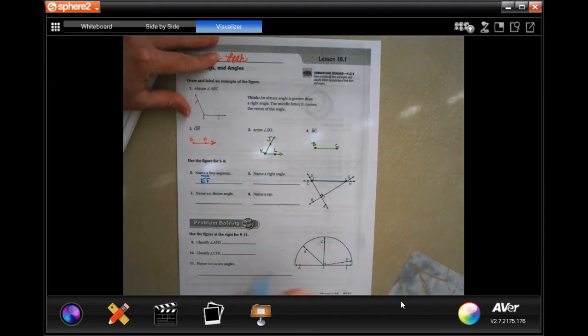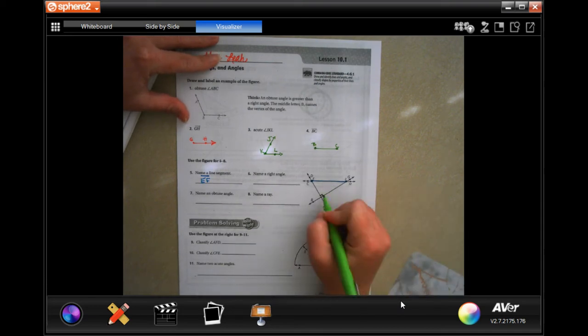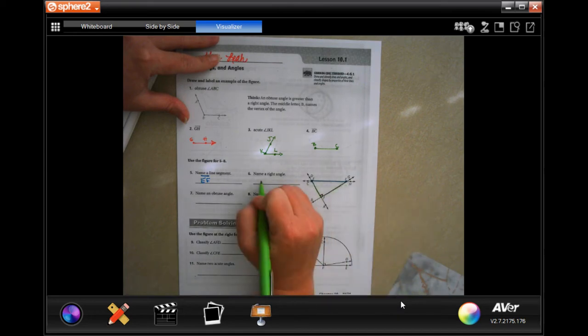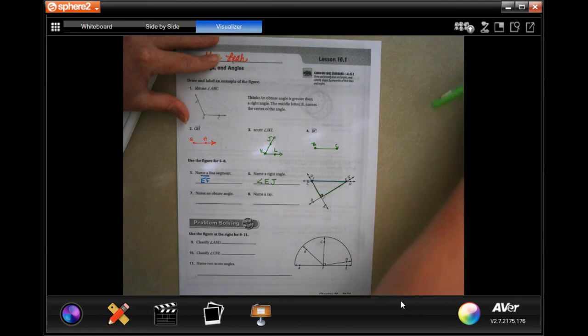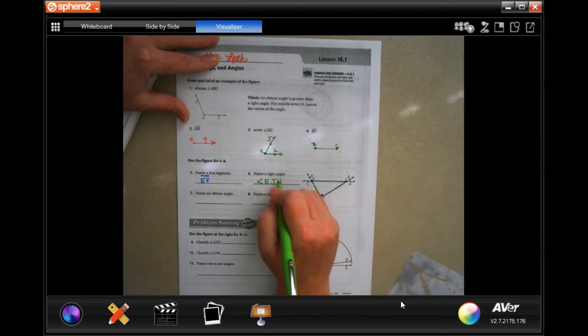Now we're going to name a right angle. Here's my right angle, so E, J, H.